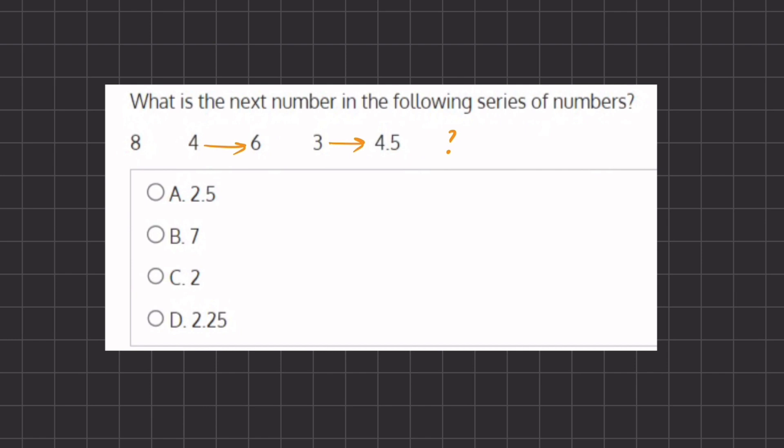It seems to only be consistent if we multiply by 1.5, because if we look at addition here, we are adding 2 and here we are adding 1.5, which doesn't seem to be a consistent pattern.